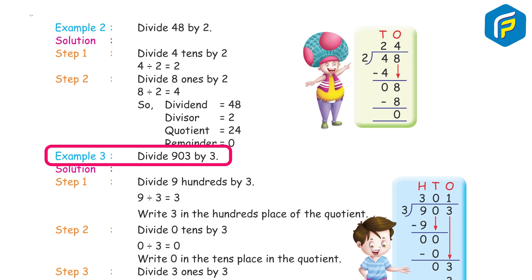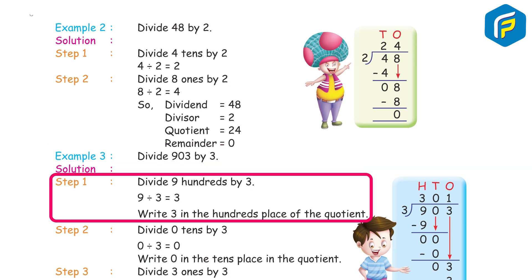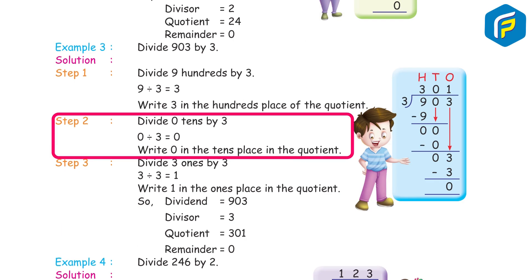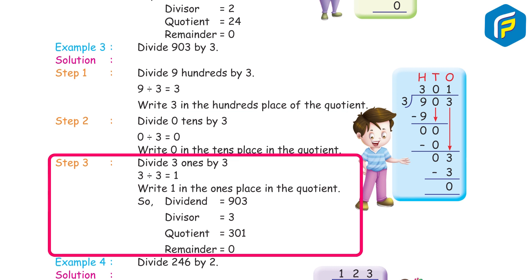Example 3: Divide 903 by 3. Step 1: Divide 9 hundreds by 3 — 9 ÷ 3 = 3. Write 3 in the hundreds place. Step 2: Divide 0 tens by 3 — 0 ÷ 3 = 0. Write 0 in the tens place. Step 3: Divide 3 ones by 3 — 3 ÷ 3 = 1. Write 1 in the ones place. So, dividend 903 ÷ divisor 3 = quotient 301, remainder 0.